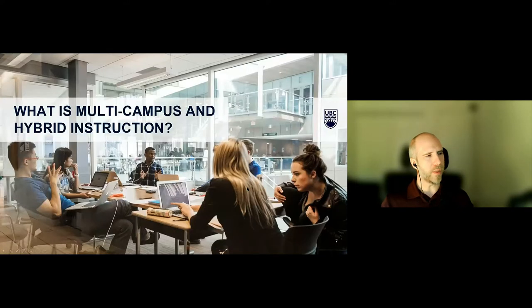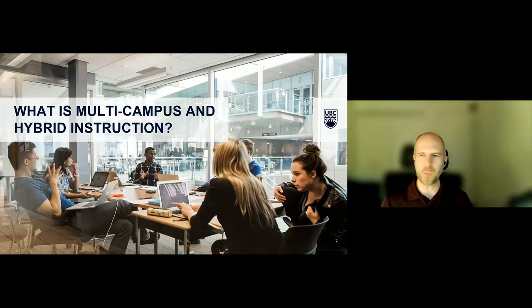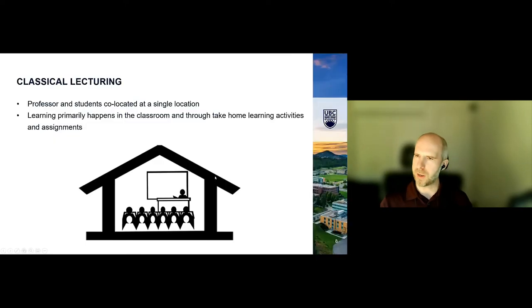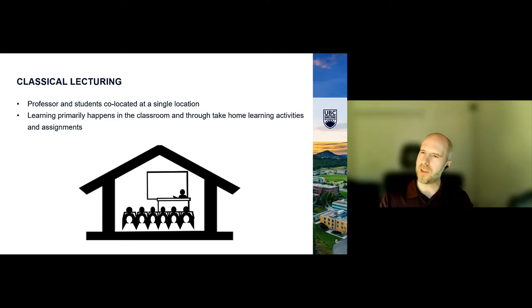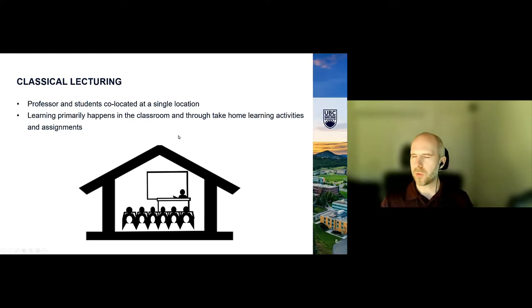Let's begin with: what is multi-campus and hybrid instruction? Starting with classical lecturing — something we're all familiar with. Professor and students are co-located at a single location. You have a big classroom, you come in, you sit down. The instructor is at the front behind a lectern lecturing. Primarily happens in the classroom — very traditional in many respects.